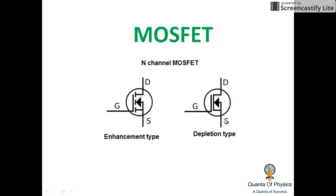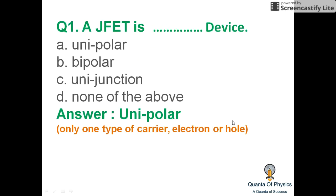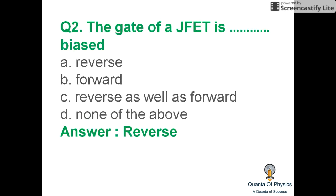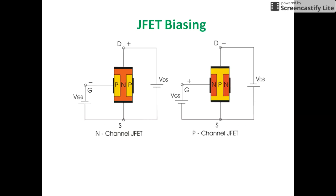Question one: A JFET is a unipolar device. A unipolar device is one in which the current carriers are only electrons or holes — only one type of current carrier. The gate of a JFET is always reverse biased.